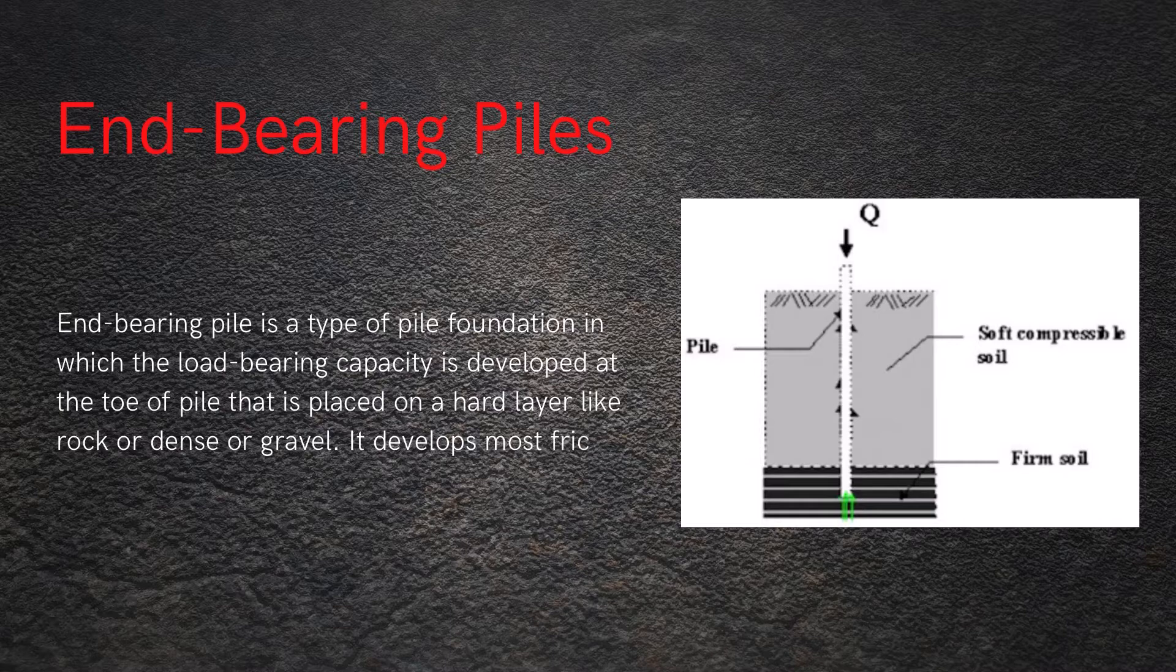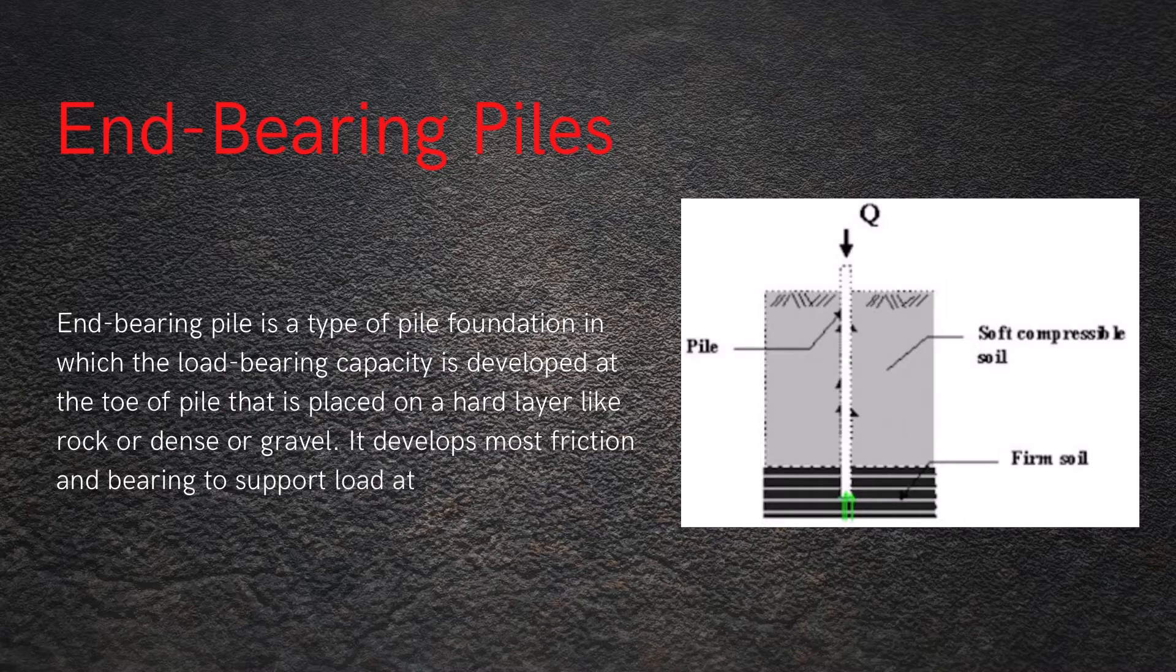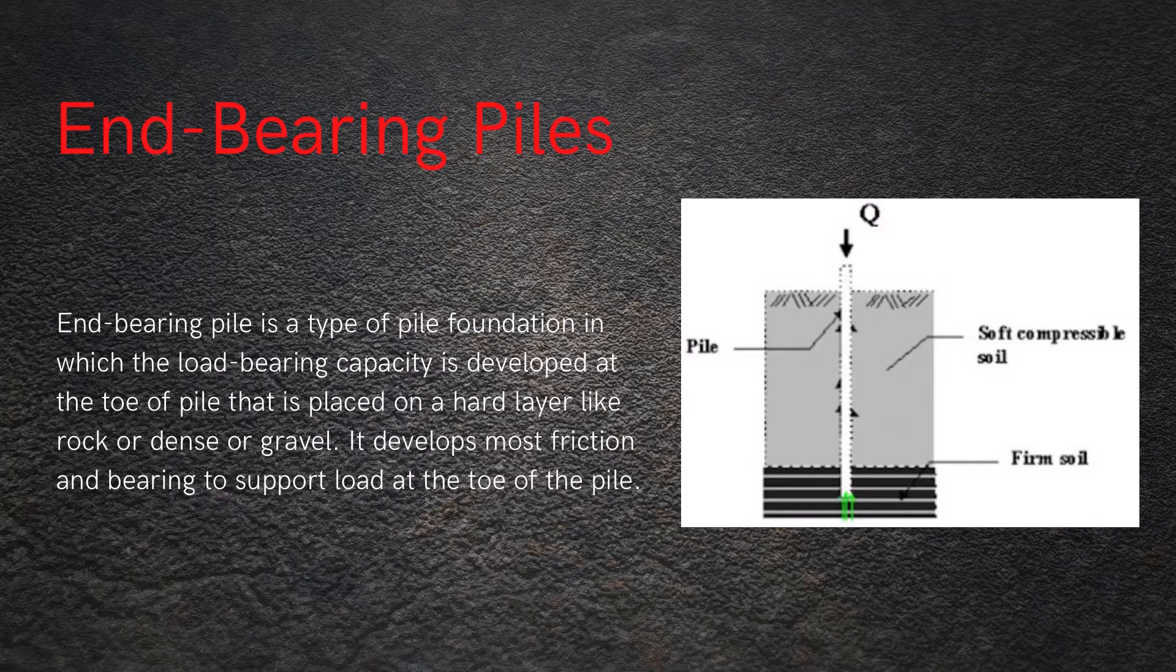End bearing piles transfer the load from the superstructure through any form of soil like soft compressible soil strata to a final hard strata. Hence end bearing piles act similar to a column structure.